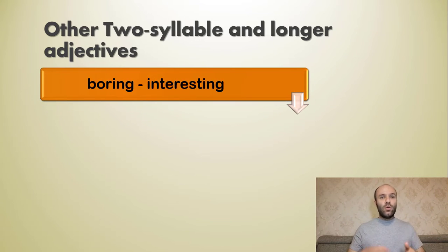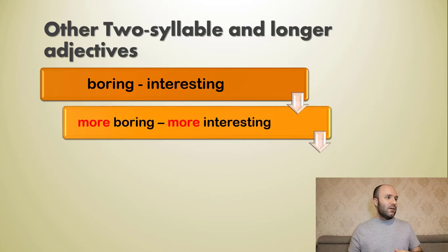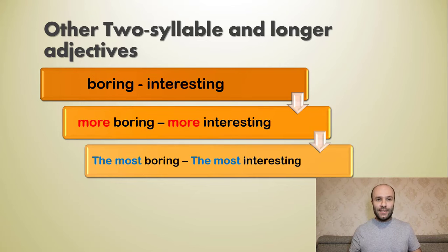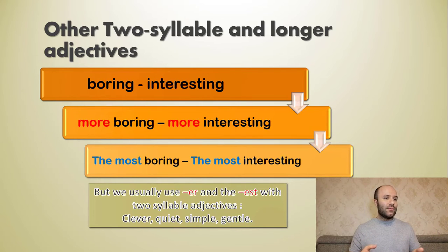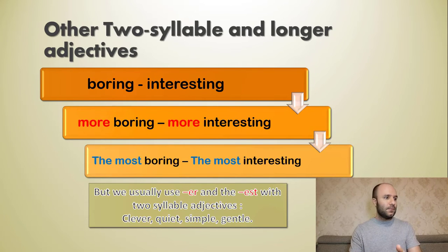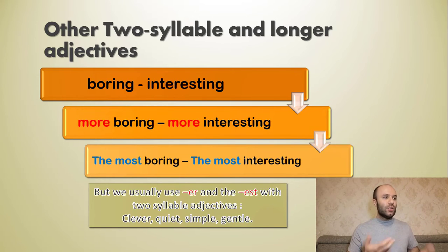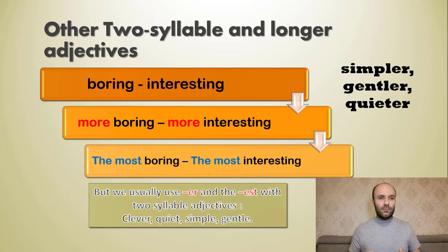For 'boring' and 'interesting' — more than one syllable — the comparative is 'more boring' and 'more interesting', and the superlative is 'the most boring' and 'the most interesting'. However, we usually use '-er' and '-est' with certain two-syllable adjectives like 'clever', 'quiet', 'simple', and 'gentle' — so 'quieter', 'simpler', 'gentler'.